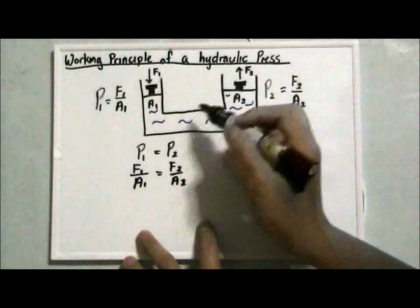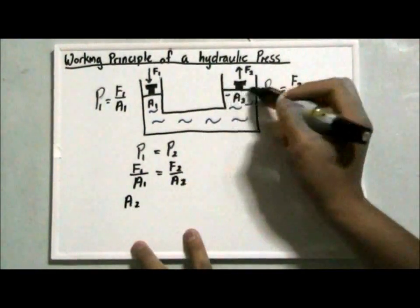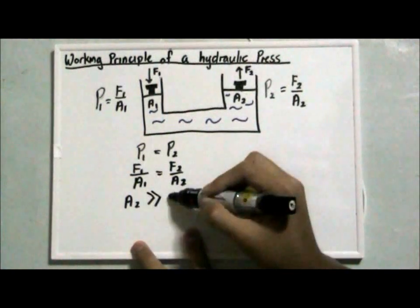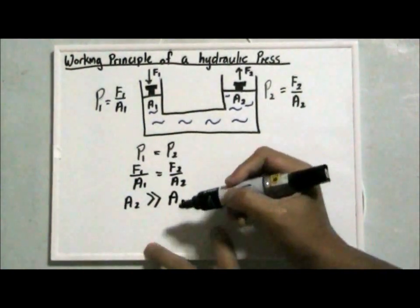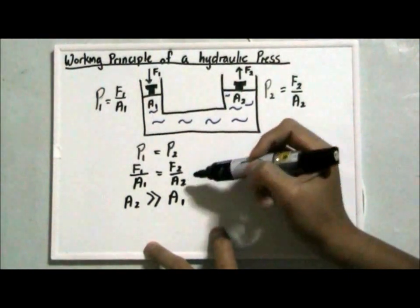In this case, area 2 here is made such that it is bigger than area 1. And since the ratio of F1 to A1 and the ratio of F2 to A2 are equal...